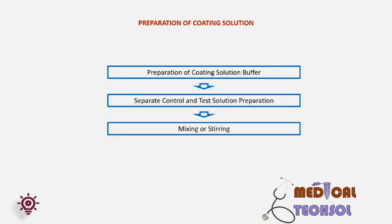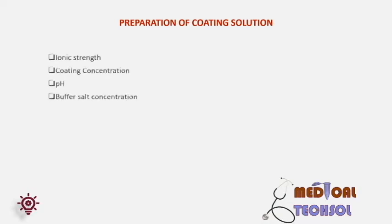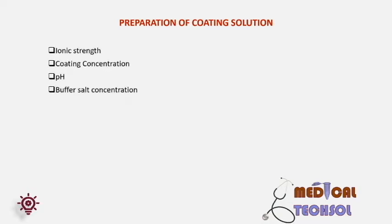Coating solution preparation: first, preparation of coating buffer; second, preparation of control and test solution — it is very important that control and test solutions are prepared separately, stored separately, and dedicated containers are used to avoid contamination. Dedicated syringes and tubing should be used during coating. Third, stirring and mixing are done separately for control and test solutions. Factors to consider while preparing the coating solution are: ionic strength, coating solution composition, pH, and buffer salt concentration.